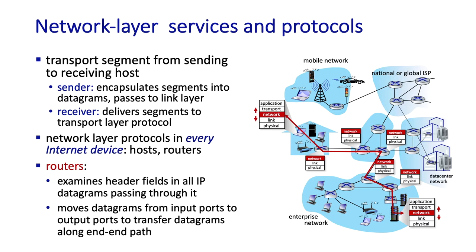And then there's the global issue, which is even more interesting: how are the collective forwarding actions of routers coordinated to make sure that a datagram follows a good end-to-end path from source host to destination host through some set of the hundreds of millions of routers in the internet? When we're done with the network layer, you'll know the principles and practices behind the answers to these questions and more.